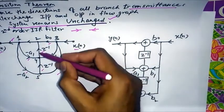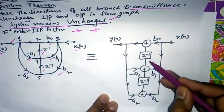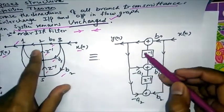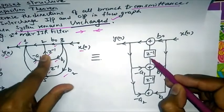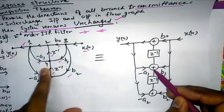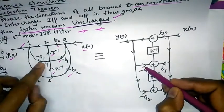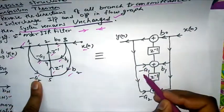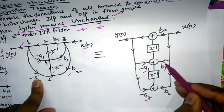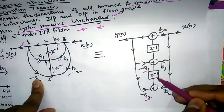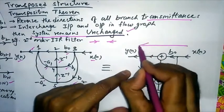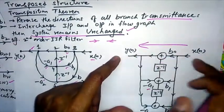Using the transposed signal flow graph, we can reconstruct a Direct Form 2 structure where all nodes are replaced by additions and all Z-inverse branches are replaced by delays with their weights preserved. Note that the direction of arrows is now inward, not outward, and the signal flows from X(n) as input to Y(n) as output.